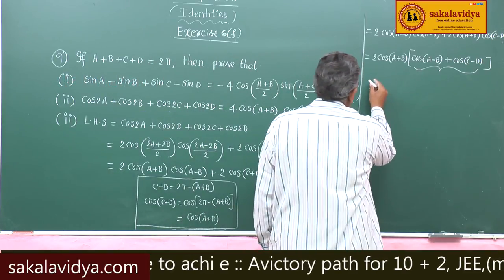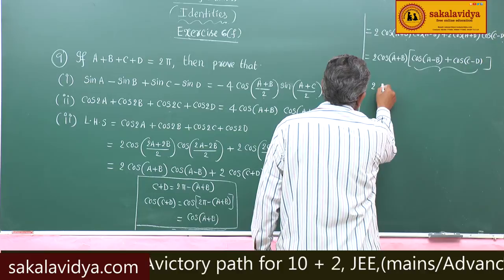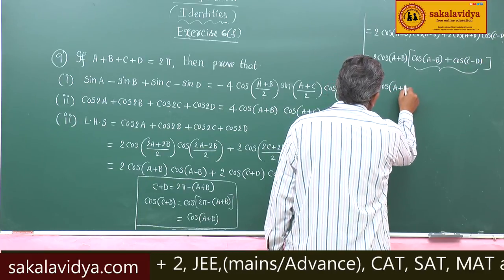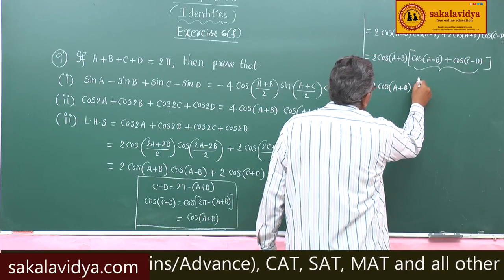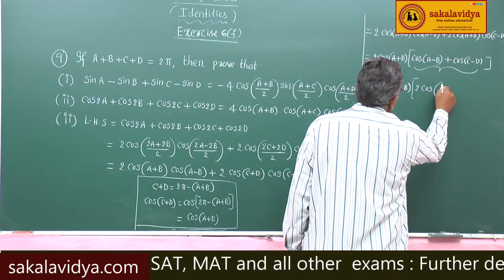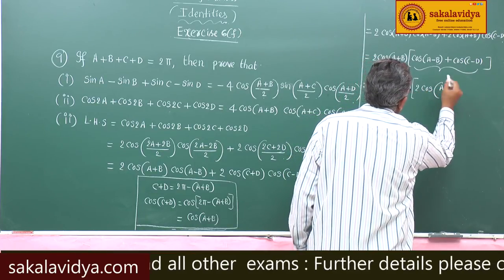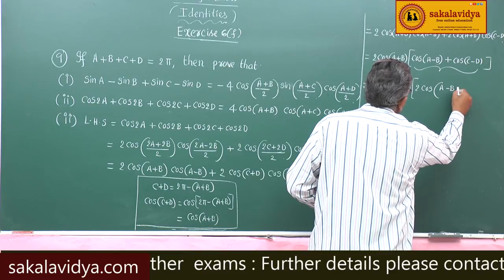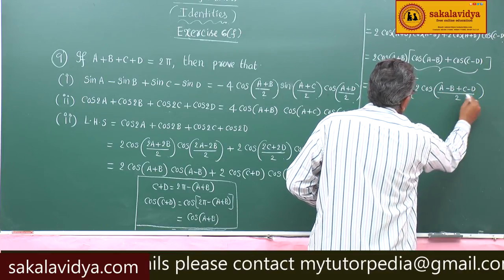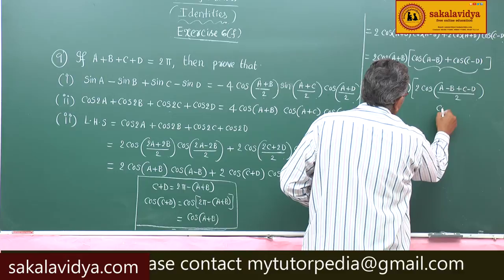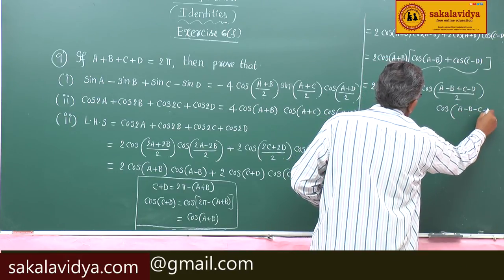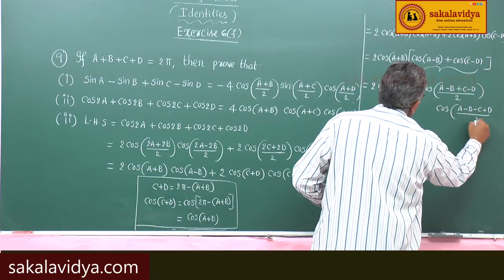So this equals 2cos(A+B) times 2cos((A−B+C−D)/2) times cos((A−B−C+D)/2), applying the cos C + cos D sum-to-product formula.